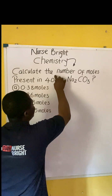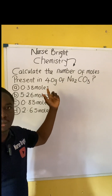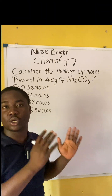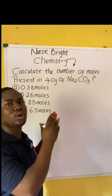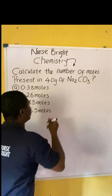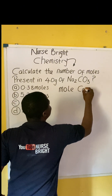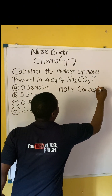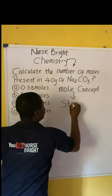They are asking us to calculate the number of moles of this compound. They gave us the mass. So before we solve this question, we have to know the concept. This question is on a very vital aspect in chemistry called the mole concept. If you understand the mole concept properly, you'll be able to understand the topic stoichiometry.